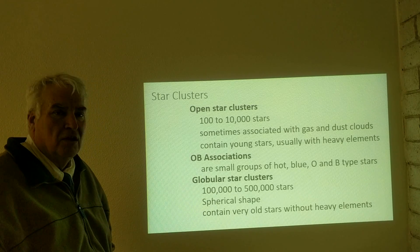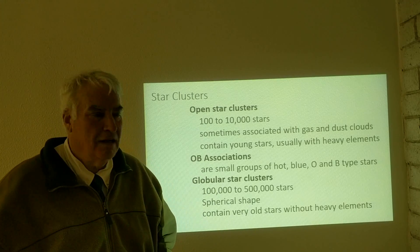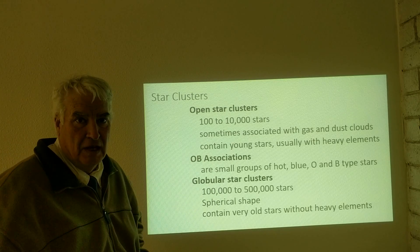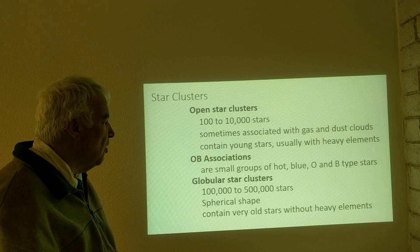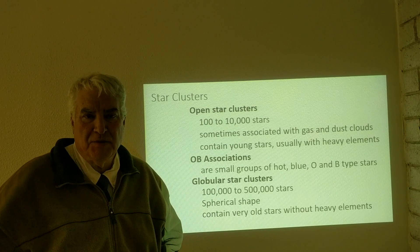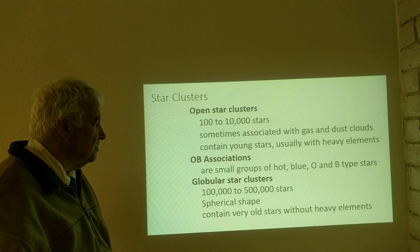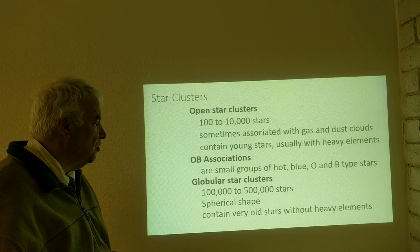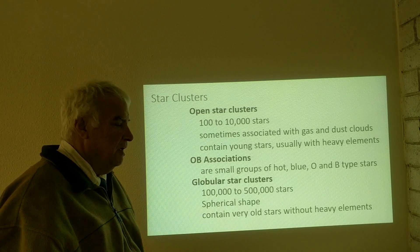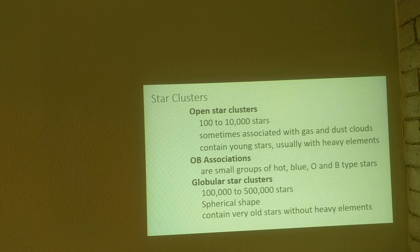Open clusters usually contain stars with heavy elements — those elements heavier than hydrogen and helium. The second group are the OB associations, which can be quite small groups of hot blue O and B type stars. Globular clusters are the huge groups of a hundred thousand to maybe five hundred thousand or more stars, spherical in shape, containing very old stars.